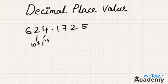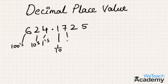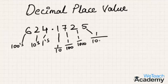2 is in the tens place and 6 is in the hundreds place. In the decimal part, 1 is in the 1/10th place, 7 is in the 1/100th place, 2 is in the 1/1000th place, and 5 is in the 1/10,000th place.